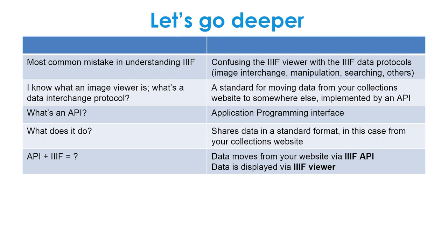What's a data interchange protocol? It's a standard for moving data from your collection website to somewhere else, or vice versa, and it's implemented via an API — an Application Programming Interface. What does an API do? It gives you a way to share data in a standard format. In this case, sharing your collection information — both the images and information about the images, and information about the objects the images represent, such as the title of an artwork, the artist, and so forth.